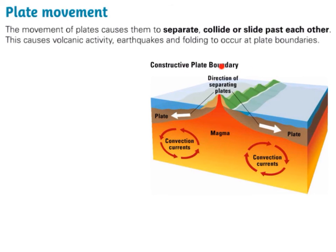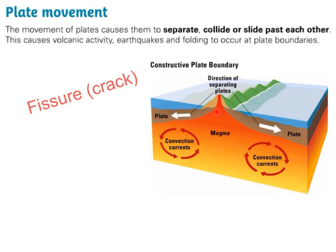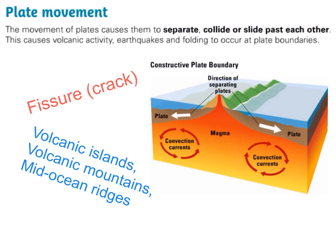Here we have a diagram of a constructive plate boundary. The convection currents in the magma are causing the plates to pull apart — they're separating. When two plates pull apart, a crack known as a fissure is created. This crack allows magma from the mantle to rise up through the opening. The magma cools and new crust is formed. Features such as volcanic islands, volcanic mountains, and mid-ocean ridges are created as a result. This type of plate boundary is called a constructive plate boundary because new land is formed.